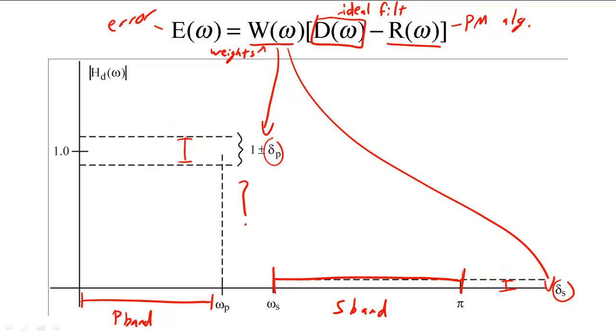As it turns out, the error is minimized if the ripples in the passband are the same size and all the ripples in the stopband are the same size.